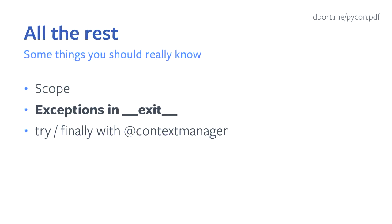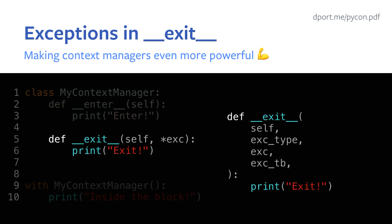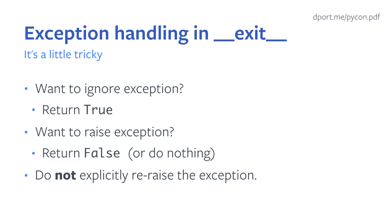Next, let's see how to handle exceptions in the exit method. Previously we showed exit with a signature that used asterisk exc to consume all remaining arguments. If we expand it out, you get the exception type, an exception, and an exception traceback. If an exception is raised inside the context manager block, your exit method has the opportunity to deal with it. If you want to ignore the exception, return True from your exit method. If you want to raise it, return False or do nothing — that's the default. Don't explicitly re-raise the exception, as that creates nested exception issues.